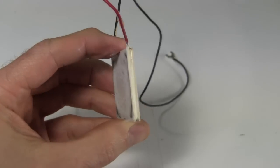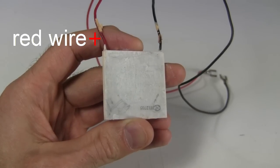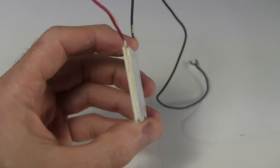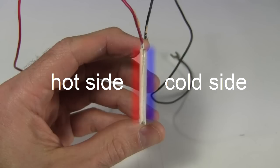And here's the Peltier module on its own. All you do is connect it to a power supply, the positive to the red wire and the negative to the black wire. As electricity flows through it, heat is transferred from this side to this side, causing this side to heat up while this side gets cold.